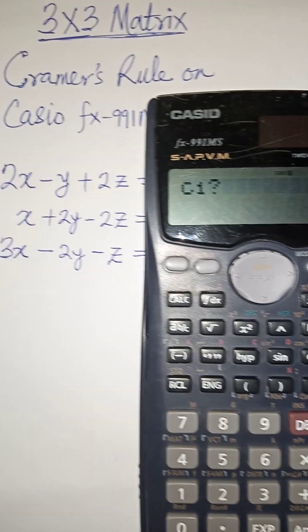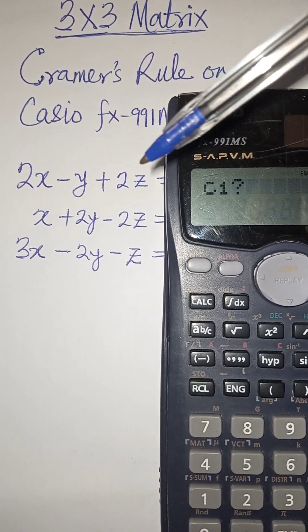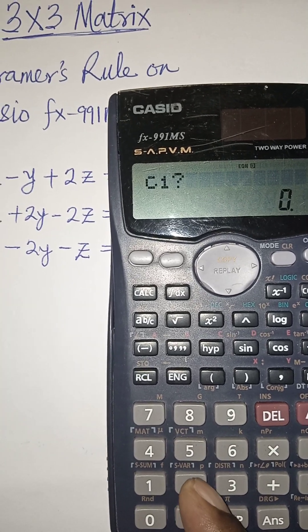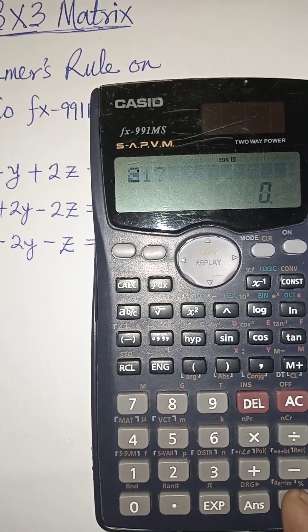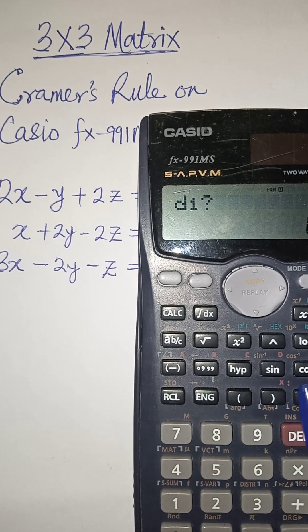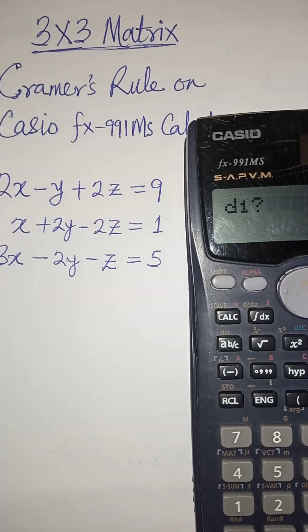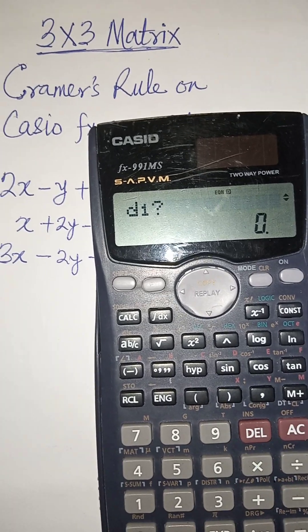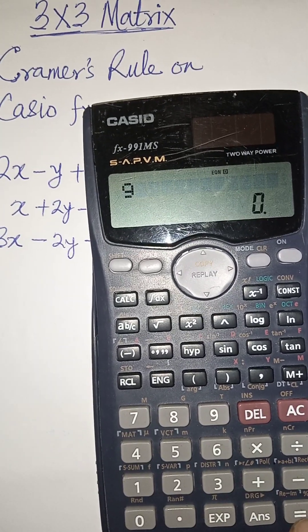It's giving option for C1 which is the coefficient of z, and that is 2. Press 2 and press equal to. Then D1 is talking about the constant you have here, which is 9. Press 9 and press equal to.